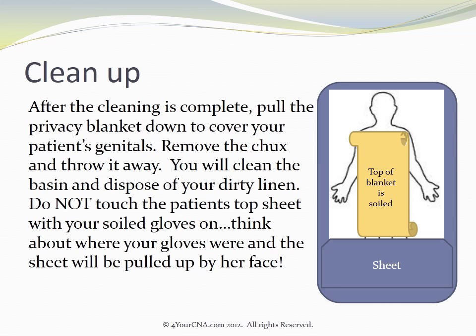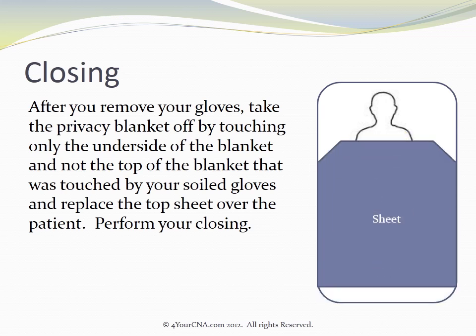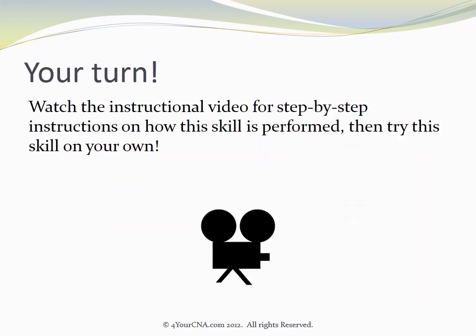After the cleaning is complete, pull the privacy blanket down to cover the patient's genitals. Remove the chucks and throw them away. You will clean the basin and dispose of your dirty linen. Do not touch the patient's top sheet with your soiled gloves on — think about where your gloves were, and the sheet will be pulled up next to the patient's face. After you remove your gloves, take the privacy blanket off by touching only the underside of the blanket, not the top that was touched by your soiled gloves, and replace the top sheet over the patient. Perform your closing. Watch the instructional video for step-by-step instructions on how this skill is performed, then try this skill on your own.